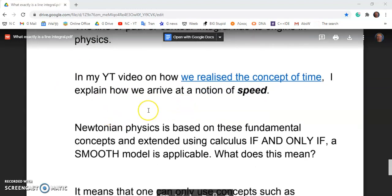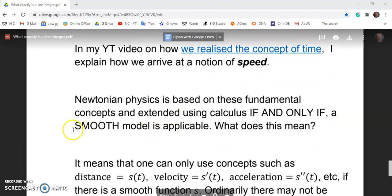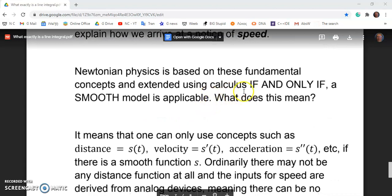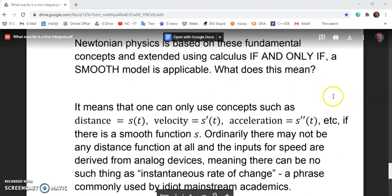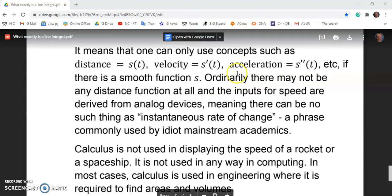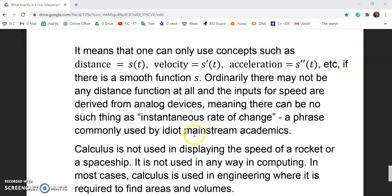So just to go back to what I said, Newtonian physics is based on these fundamental concepts and extended using calculus if and only if a smooth model is available. And what does this mean? It means that one can only use concepts such as distance, velocity and acceleration, as you see here in terms of a distance function s, if there is a smooth function s. In other words, if s exists as a smooth function, otherwise you can't use calculus at all.